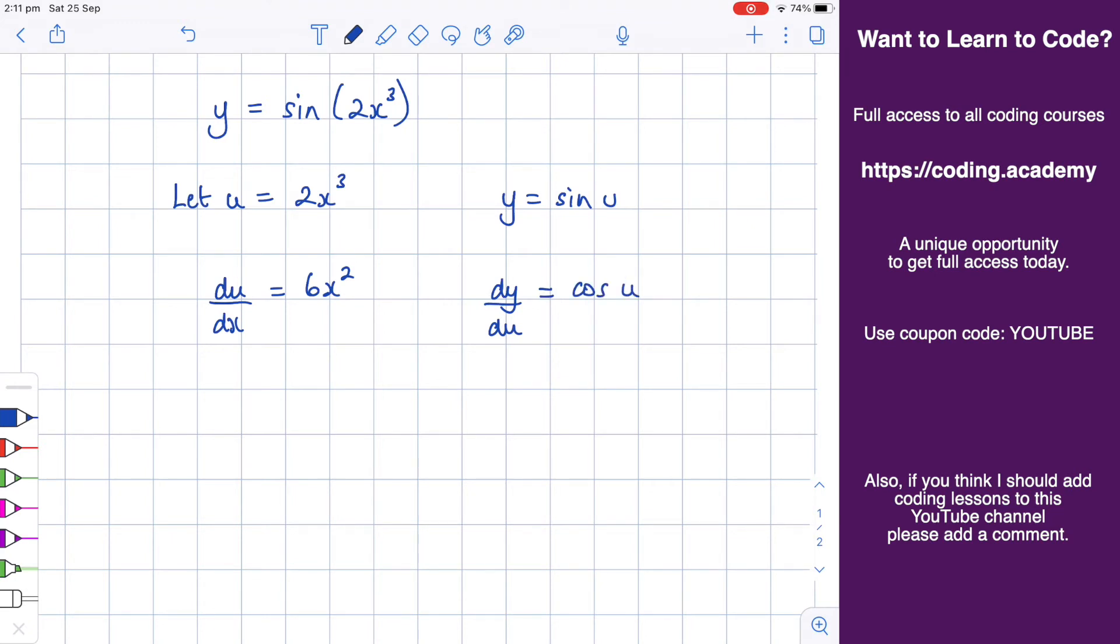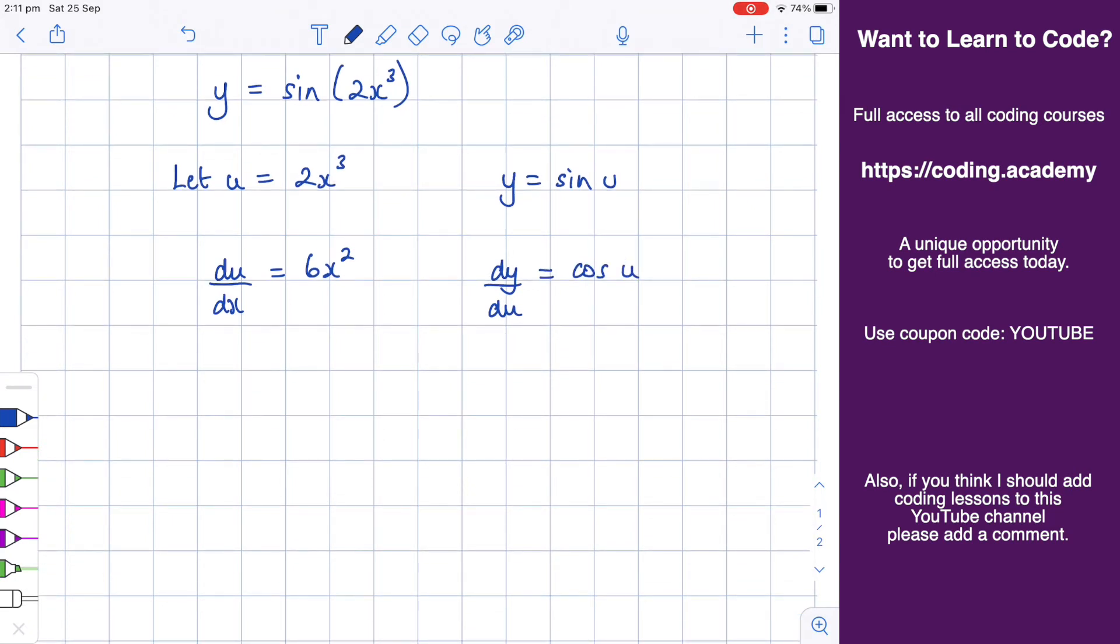We're going to apply the chain rule. So dy by dx is equal to dy by du multiplied by du by dx. Now we can substitute in those values. dy by du, that's cosine of u. And du by dx, well, that's 6x squared.